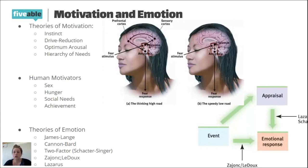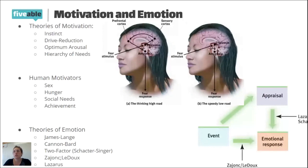Convergent versus divergent thinking: convergent thinking is when we try to problem-solve and find the one specific answer — think of things converging to a single point. Divergent thinking is when things are separating — we're trying to be creative and think of as many solutions to a problem as possible.